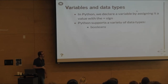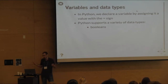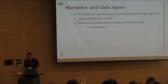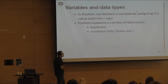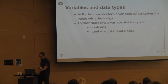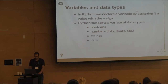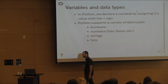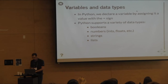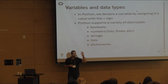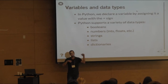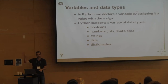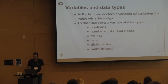Python supports booleans (true or false), numbers of different kinds — integers and floats — strings, lists (ordered collections of things, the equivalent of arrays in many other languages), and dictionaries, also called associative arrays or hash tables, where you have key-value pairs. There are many other data types as well.